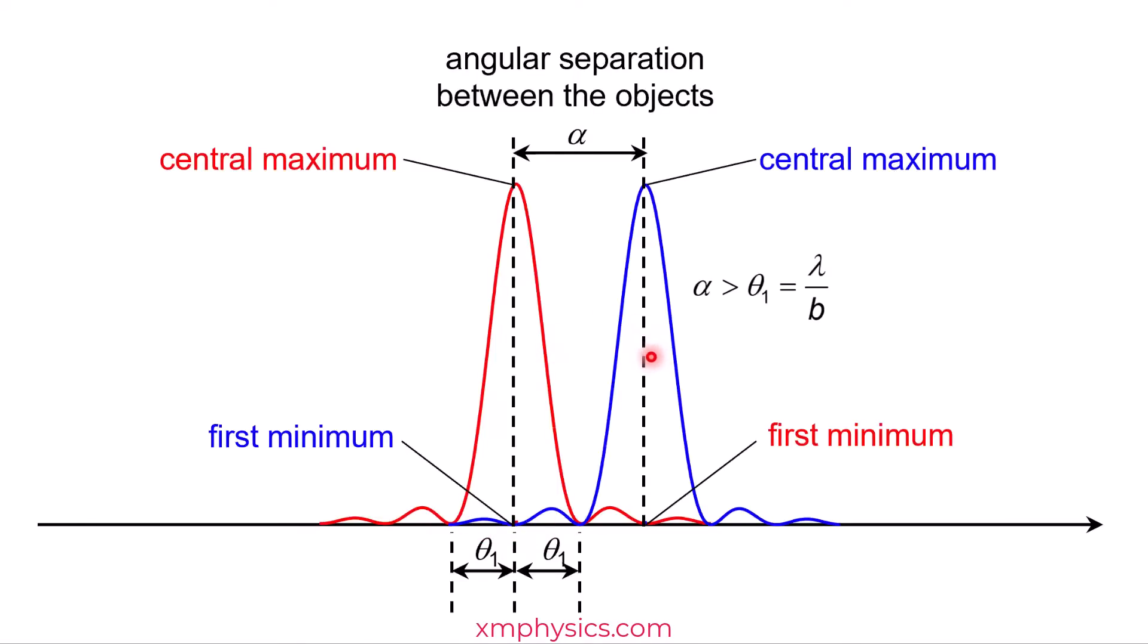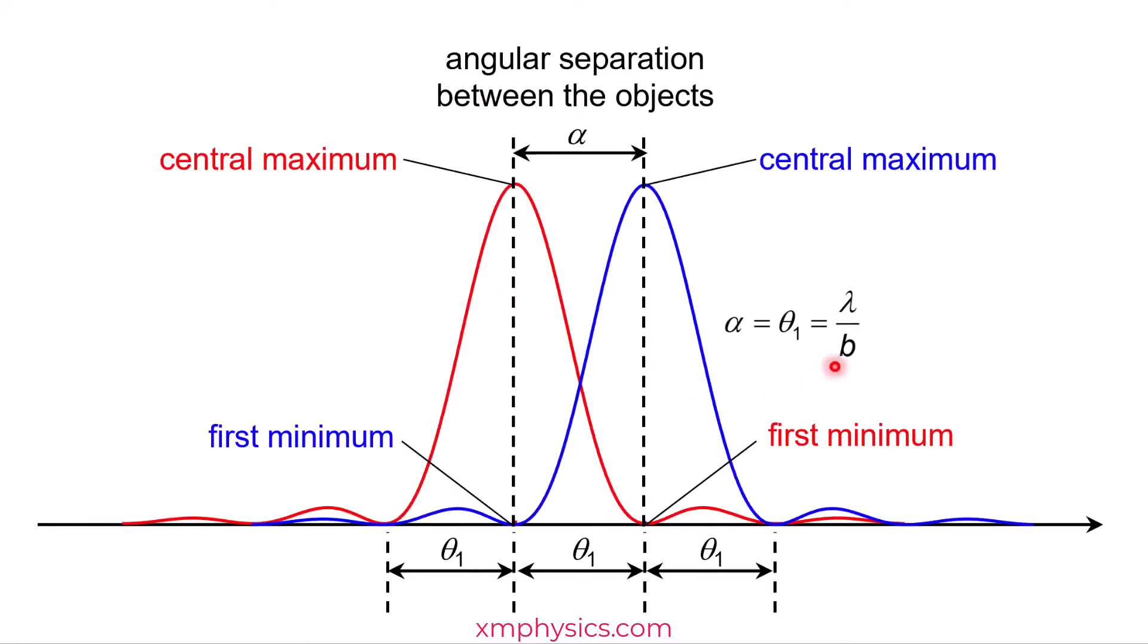But this is an overkill, it more than fulfills the Rayleigh's criteria. If you want to just fulfill Rayleigh's criteria, you just need b to be large enough so that the first minimum angle matches the angular separation. See, the spread, the first minimum angle matches the angular separation.